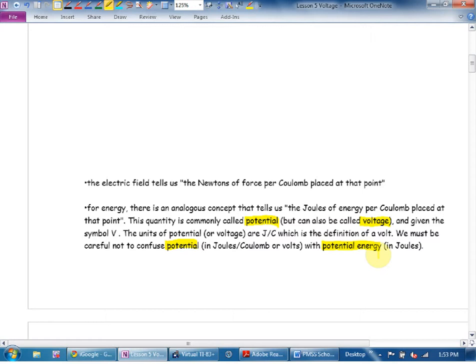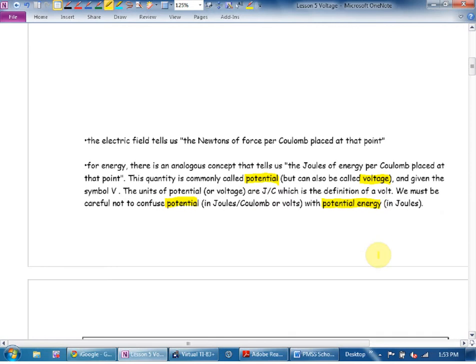So, the units of potential or voltage are joules per coulomb. But as it turns out, one joule per coulomb is the definition of one volt. We must be careful not to confuse potential with potential energy. This is where, I'm sorry, keep your formula sheets out. Keep looking at them. Memorize what goes where. Keep stuff straight.